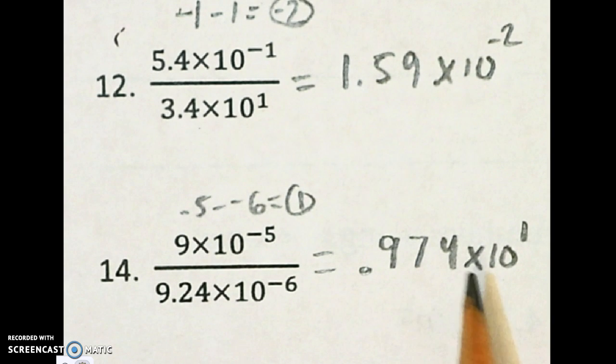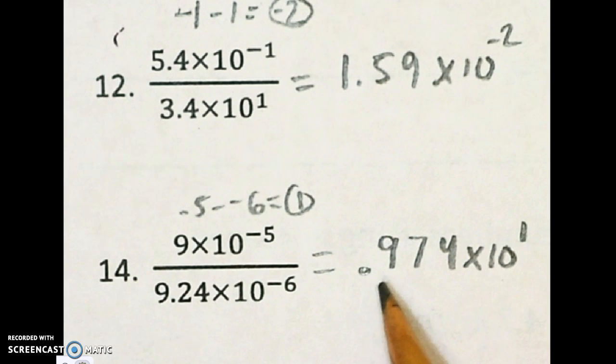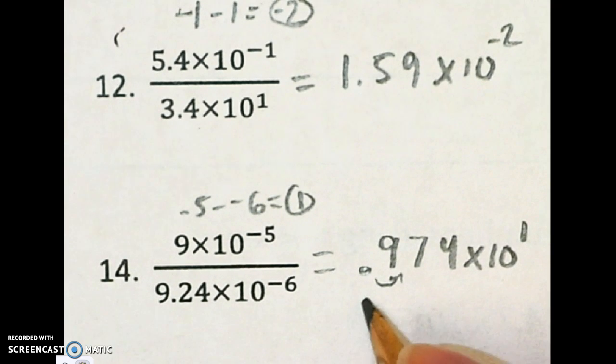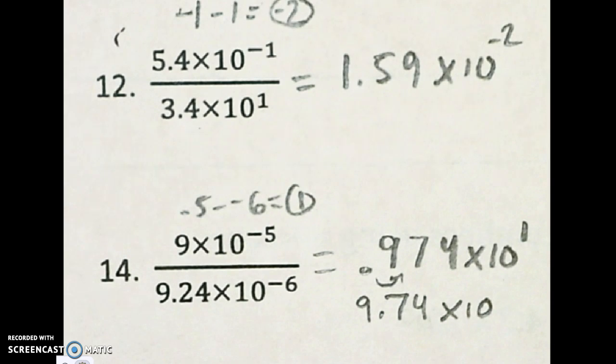But on this one, I can't stop here. I have to have it in scientific notation. So this decimal needs to get moved over one space. So it's really going to be 9.74 times 10. And if you move your decimal to the right, your power goes down. So that power on this is actually to the 0 power.